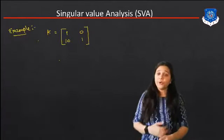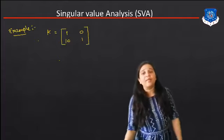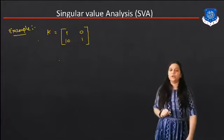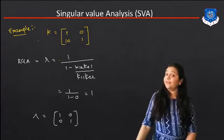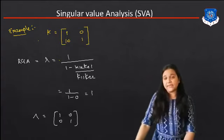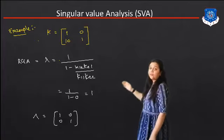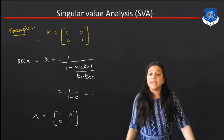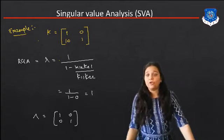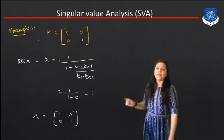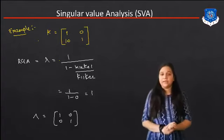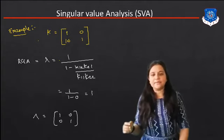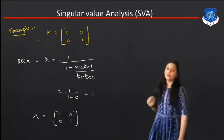For more understanding, let's take one example. The steady-state gain matrix K is given as [1, 0; 10, 1]. Now we have to find the RGA. The equation of RGA: Lambda 11 equals 1 upon 1 minus (K12 times K21) divided by (K11 times K22). Putting the values: 1 upon 1 minus 0, we get the answer 1. So the RGA matrix is [1, 0; 0, 1].